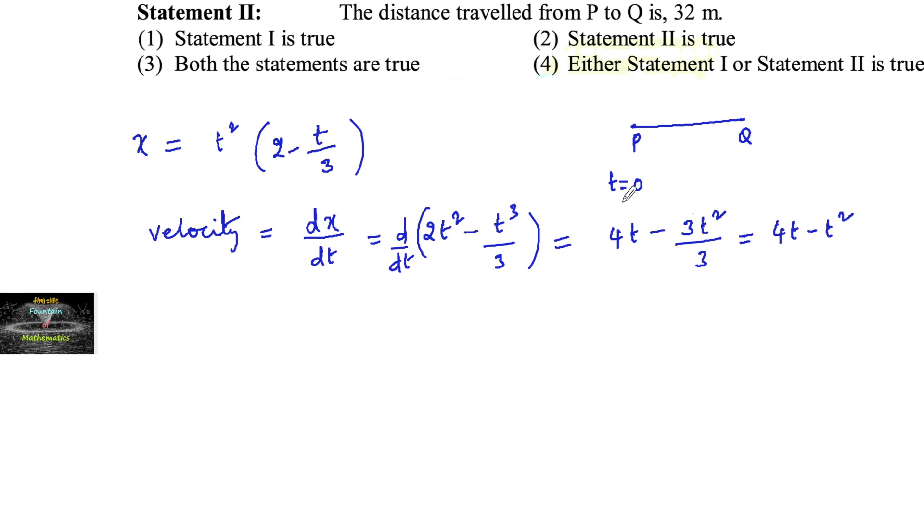Velocity is 0 either at the starting position or stop position. If velocity v equals 0, that is dx by dt equals 0, then 4t minus t squared equals 0, taking t common, 4 minus t equals 0.